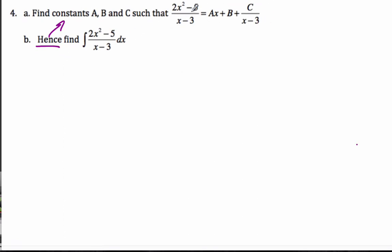Well, if I'm going to do this, basically what I'm doing is (x minus 3) times (Ax plus B) plus C is going to equal 2x squared minus 5. If I multiply everything by x minus 3, that's what I get. And so I know that when I multiply these first two, that's Ax squared, A has got to be 2.